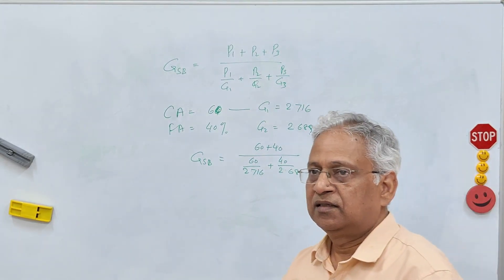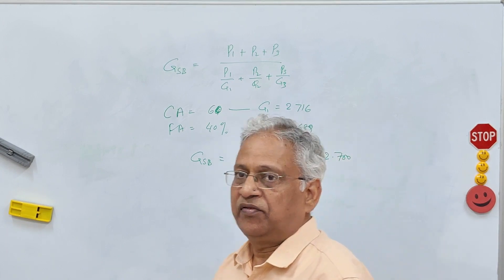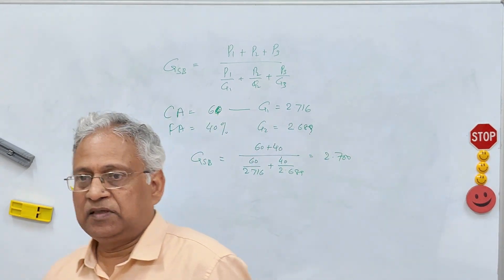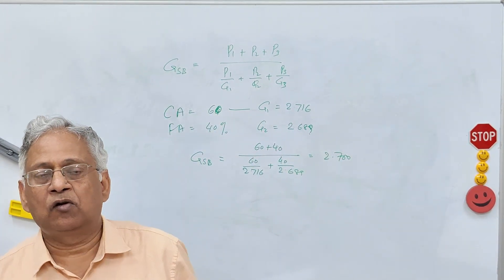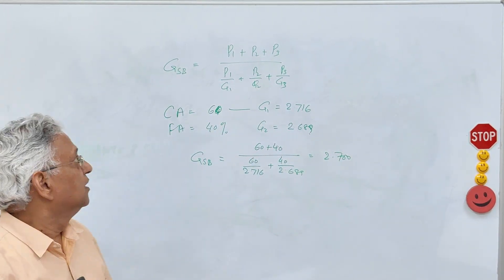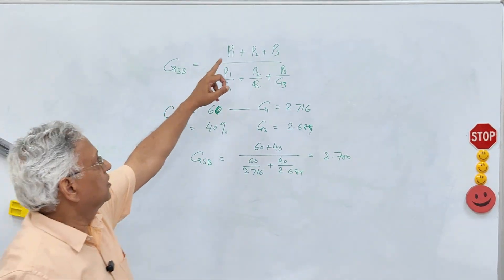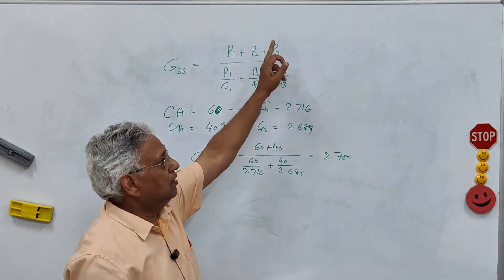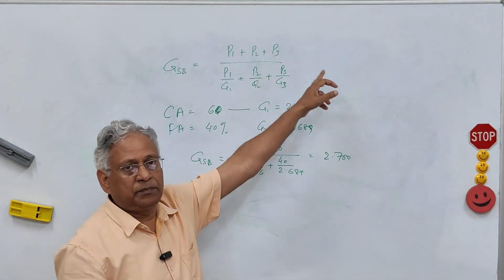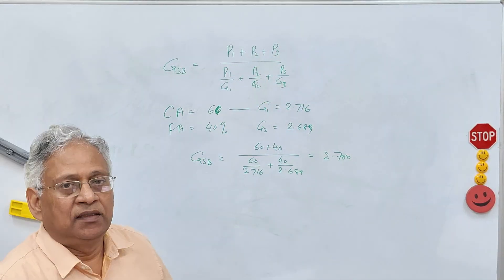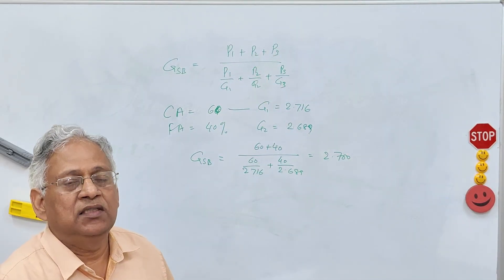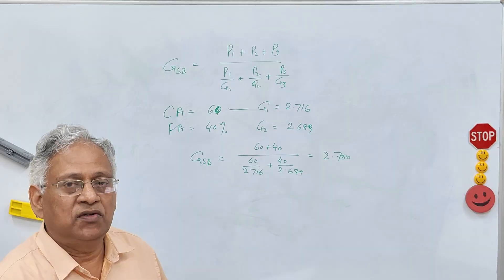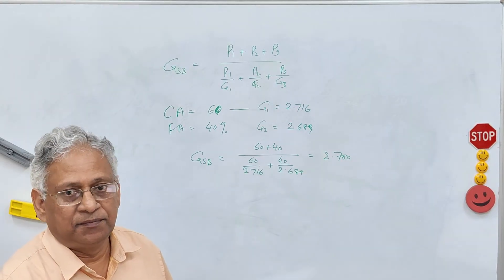If you have stockpiles with different specific gravities, you can extend the formula to P1 + P2 + P3 + P4 + P5 and so on. Thank you very much for watching this video. If you have any questions, you can write.